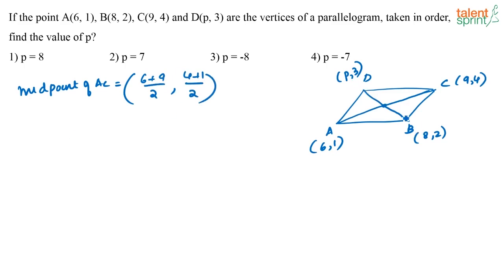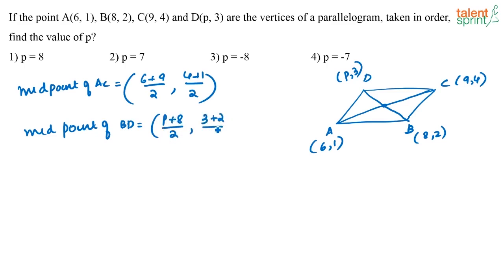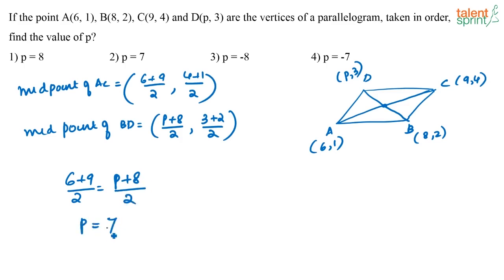That is the same as the midpoint of BD. The coordinates for midpoint of BD are P plus 8 by 2 comma 3 plus 2 by 2. Now these two are going to be the same. So 6 plus 9 by 2 is equal to P plus 8 by 2, which gives P is equal to 7. So the correct answer is option 2.